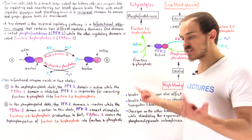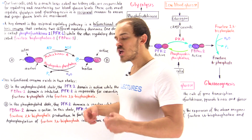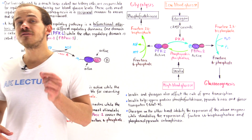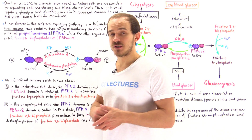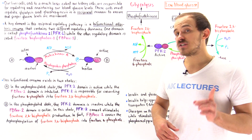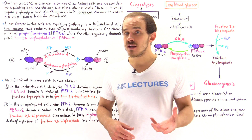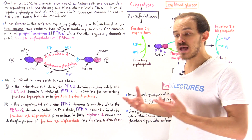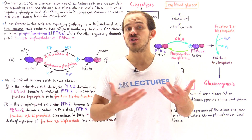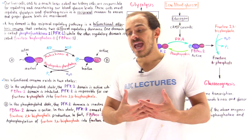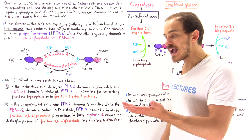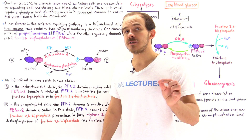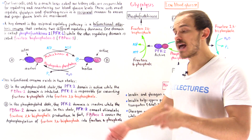Other cells, such as brain cells and muscle cells, don't actually use gluconeogenesis — only to a very small extent under very extreme conditions. In fact, we have cells such as red blood cells that cannot use gluconeogenesis at all, because red blood cells actually don't have mitochondria.